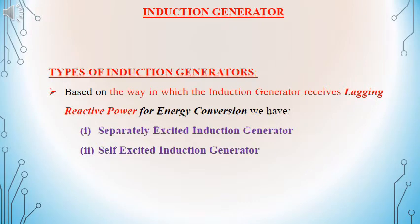Depending on the way in which the induction generator receives the lagging reactive power, we have two types of induction generator: one is separately excited induction generator and the second one is self-excited induction generator.